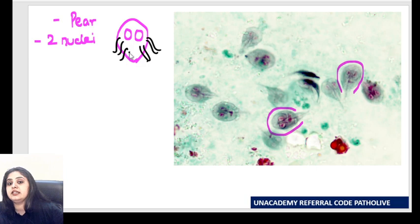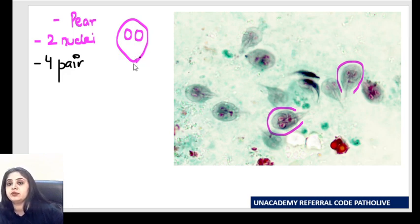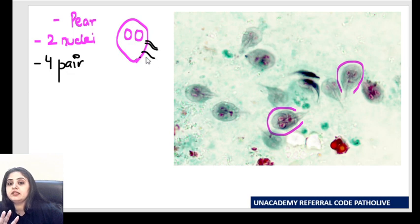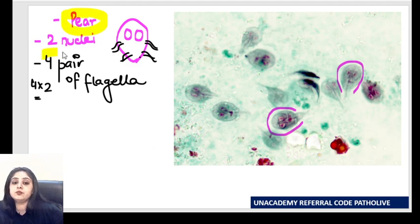Remember, Giardia lamblia is known for having four pairs of flagella. This is a very important point because there's a very similar-looking organism called Trichomonas, which is also pear-shaped — but Trichomonas has four plus one, that is five flagella in total. Giardia has four pairs, so eight flagella total. Remember: a pear-shaped organism with four pairs of flagella defines Giardia lamblia. It starts looking like an angry man's face, and that is how they describe it.